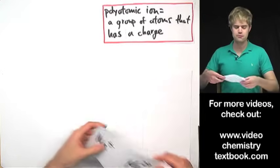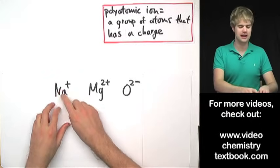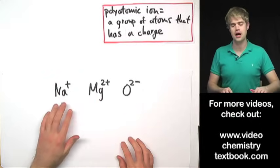Here's what I mean. You probably already know that individual atoms can have a charge. They can form ions. So we can get things like Na+, Mg2+, and O2-.